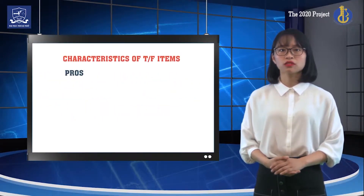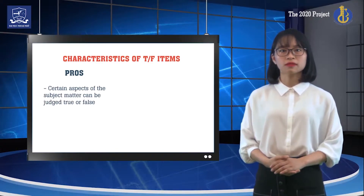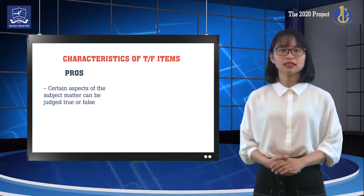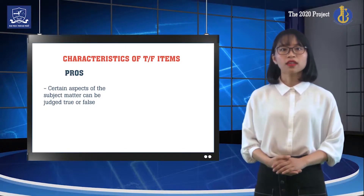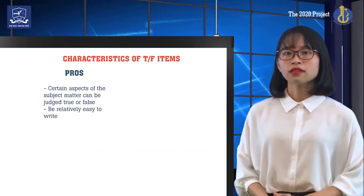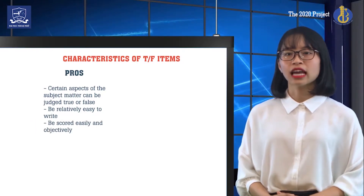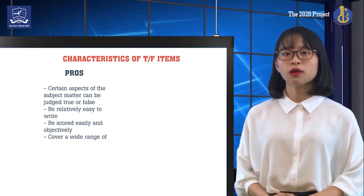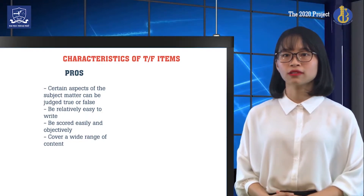Teachers often use true-false items because, first, certain aspects of the subject matter readily lend themselves to verbal propositions that can be judged true or false. Second, they are relatively easy to write. Third, they can be scored easily and objectively. And fourth, they can cover a wide range of content within a relatively short period.